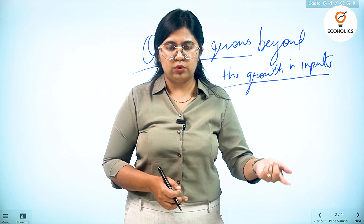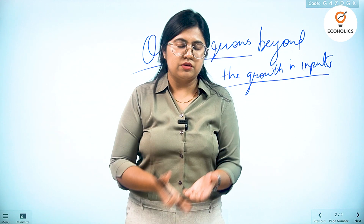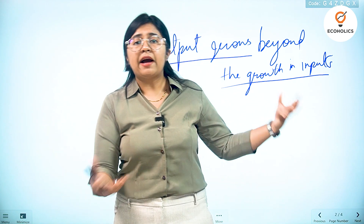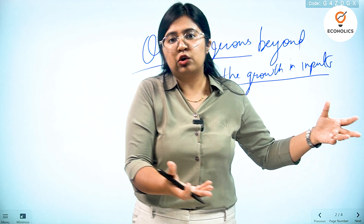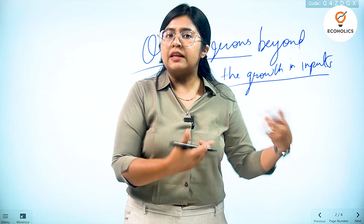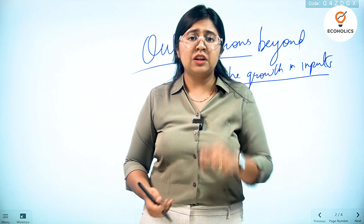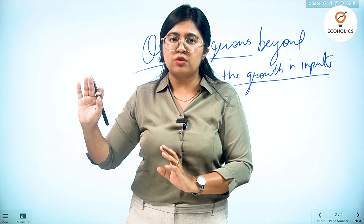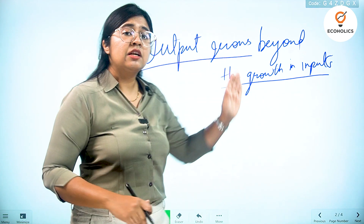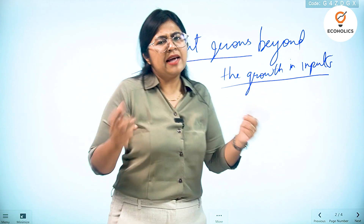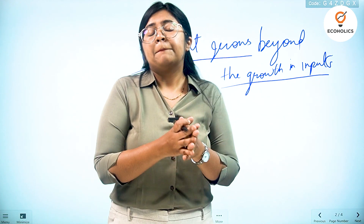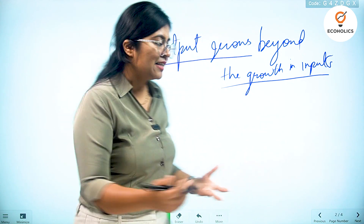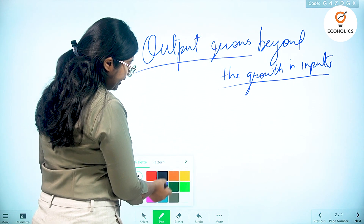Solow said that these inputs should also grow along with the growth in output, because the expansion of different industries and units is taking place with the growth in the economy. So with the growth in output there has to be an increase in inputs as well. However, he said that there is a difference — inputs are also increasing and the growth in output is also happening, but the growth in output is growing much beyond the growth in inputs. He found that economists previously were ignoring some important things happening during the growth process.